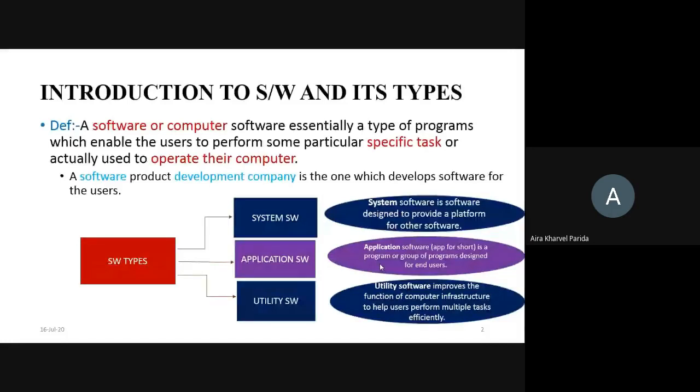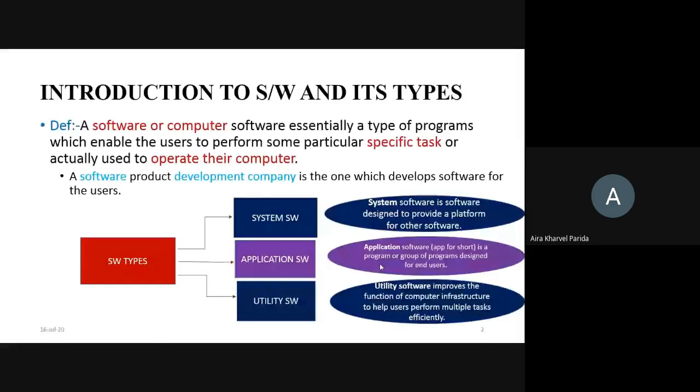Now forget about the hardware components; coming to the software components. What are the softwares? Softwares are coded — meaning some programming languages are used in order to build a software. The programming languages may be Java, .NET, CSS, or other kinds of things. These are the programming languages used to code the software.